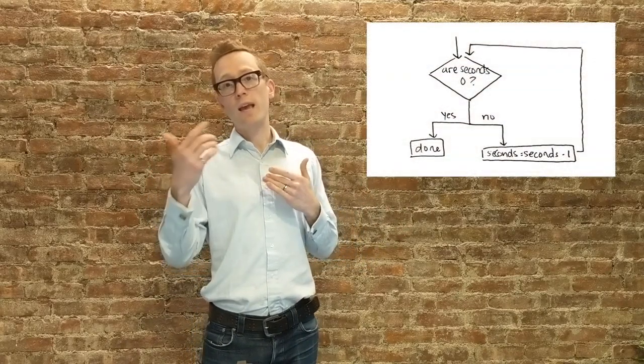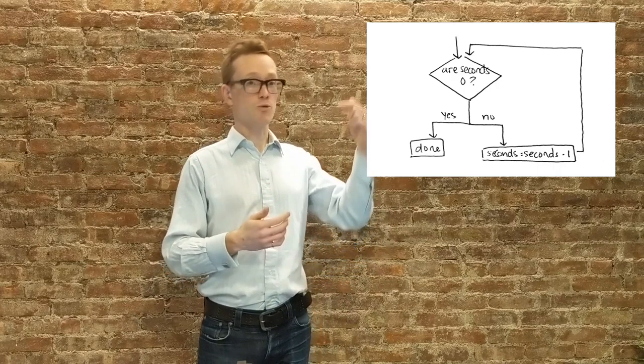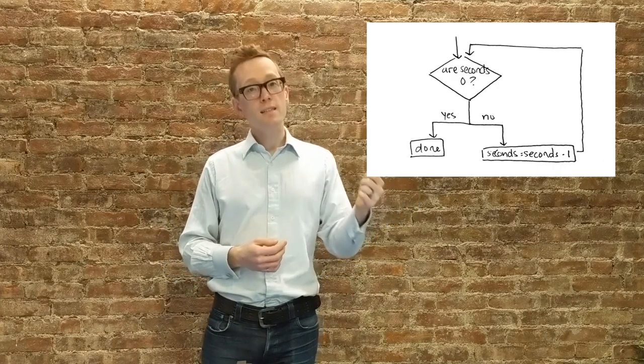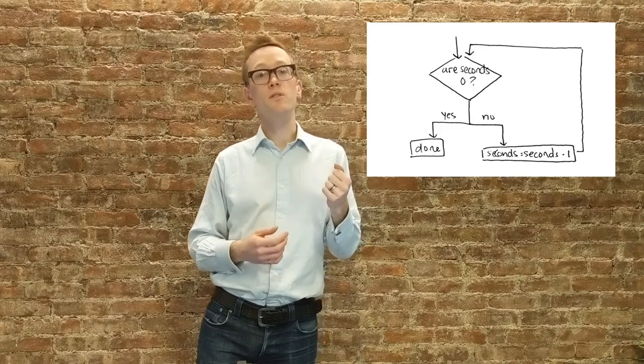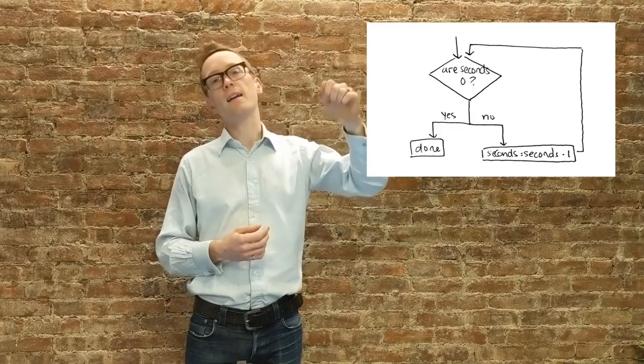For example, if we want to now count down until the total seconds remaining is zero, we can subtract one from the total, test to see if that total is equal to zero, and if it is not equal to zero, jump back and subtract one again. This is a loop.